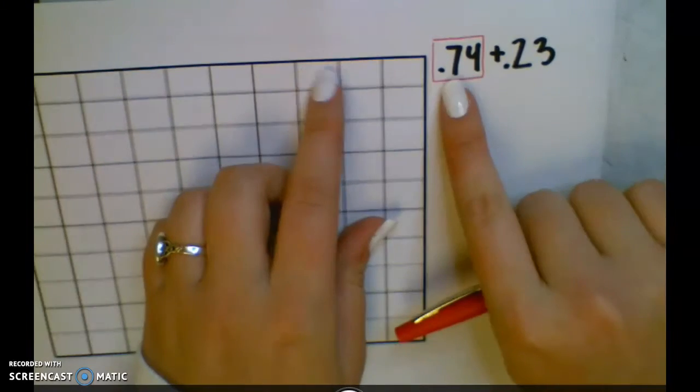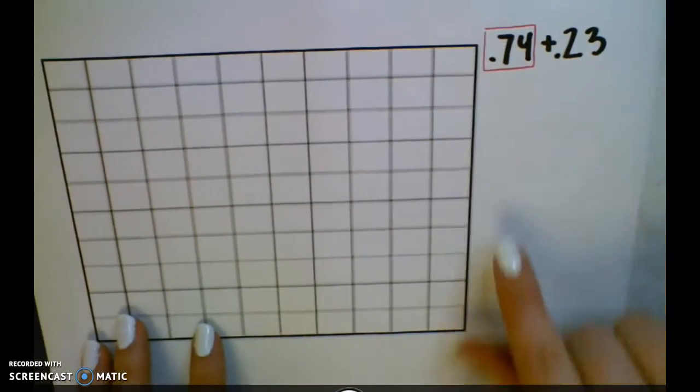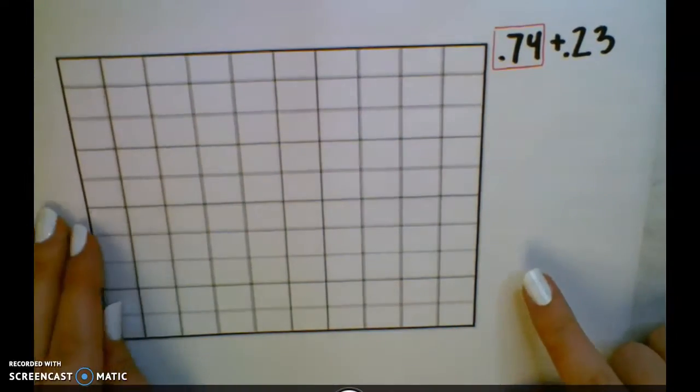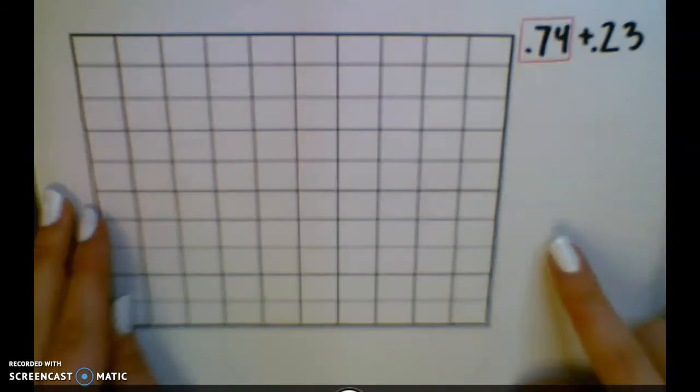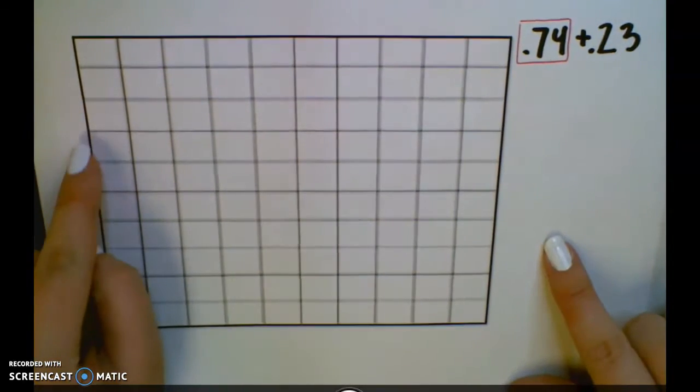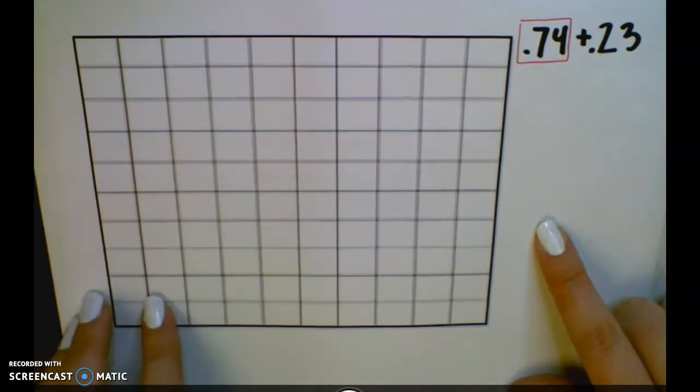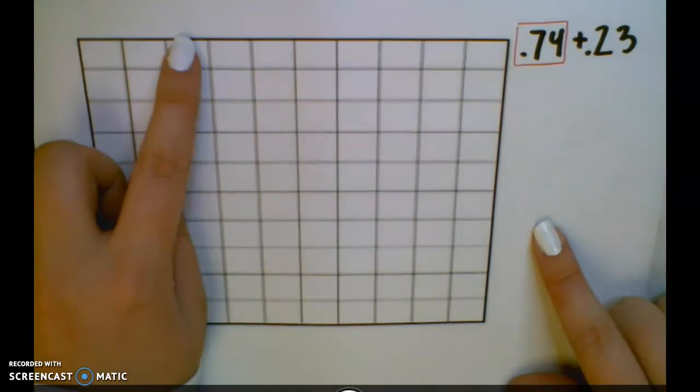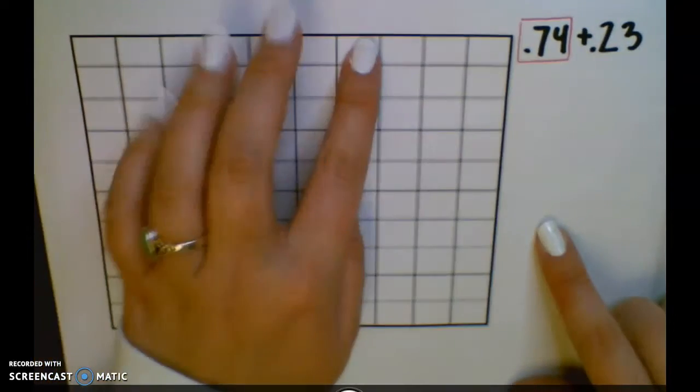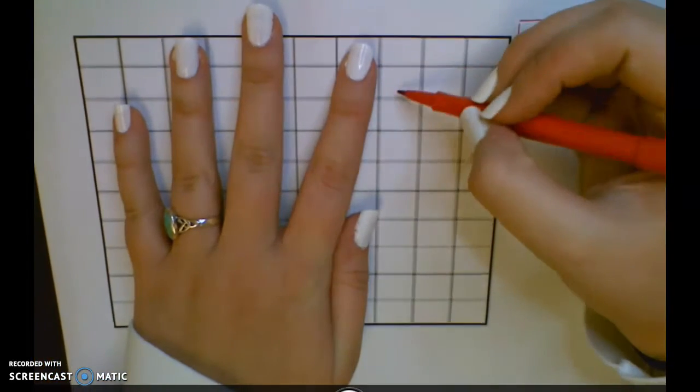So I'm going to shade 74 hundredths in my hundredths grid. An easy way to remember, instead of counting each individual square 74 times, I know that each column is 10 squares, so 10, 20, 30, 40, 50, 60, 70, and then 1, 2, 3, 4.